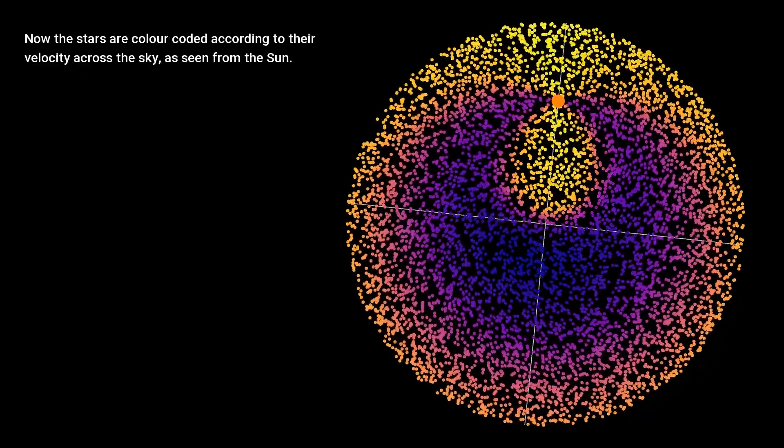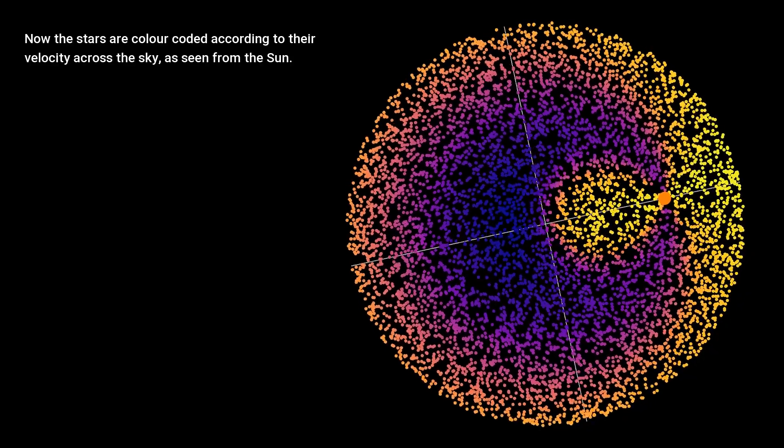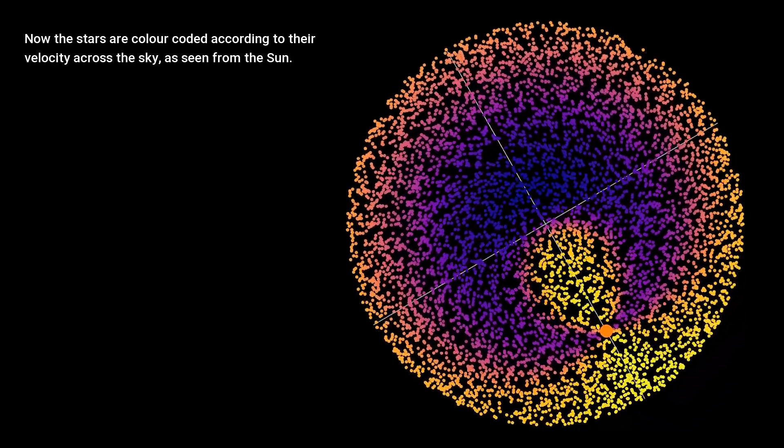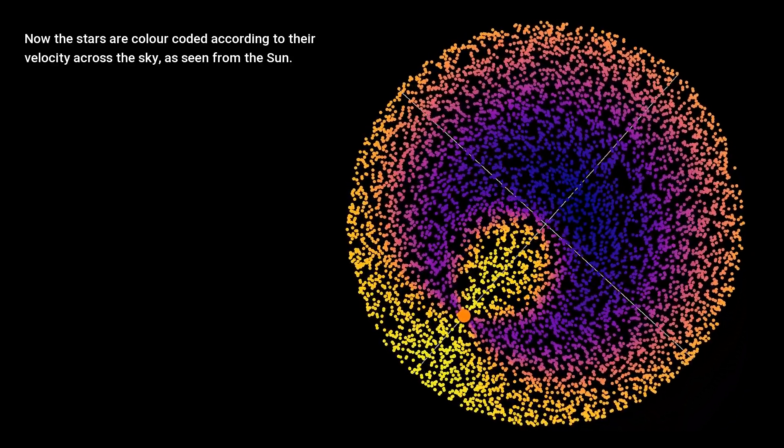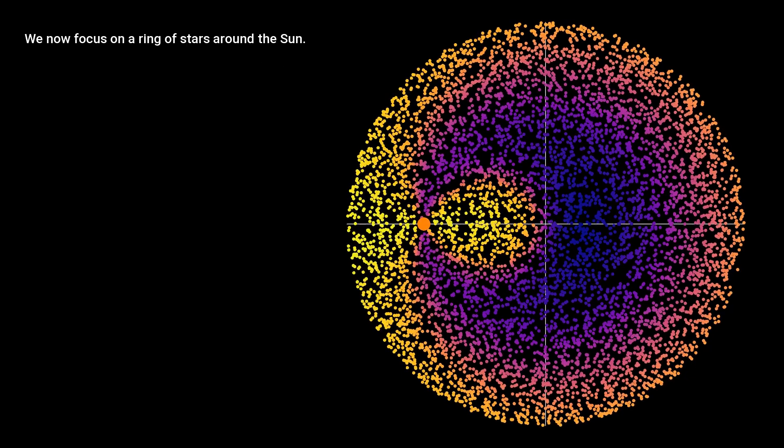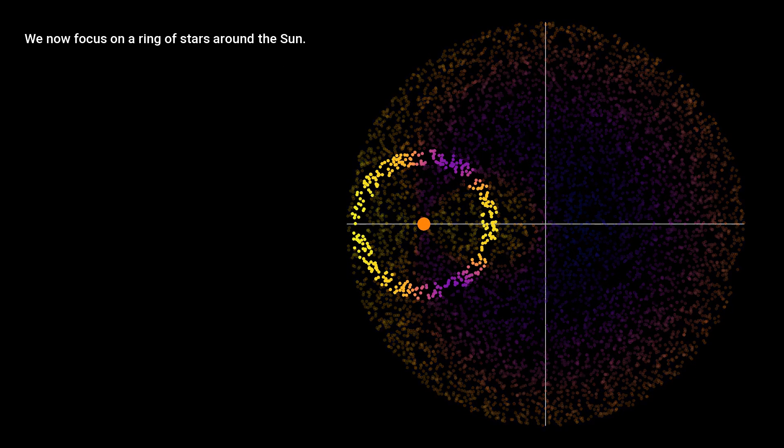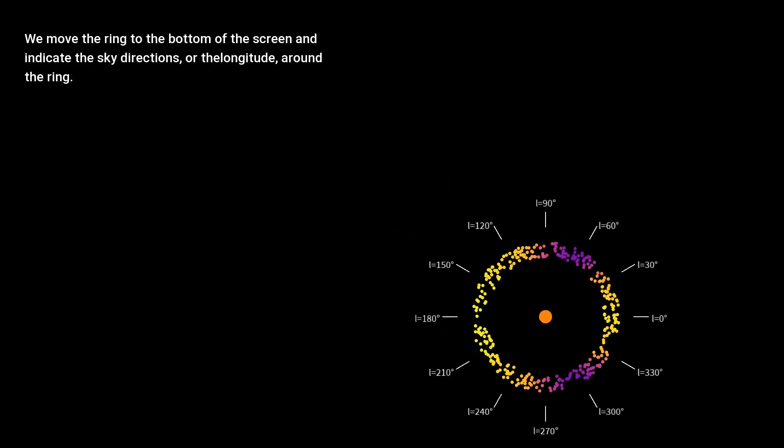Now the stars are color-coded according to their velocity across the sky as seen from the Sun. We now focus on a ring of stars around the Sun. We move the ring to the bottom of the screen and indicate the sky directions or the longitude around the ring.